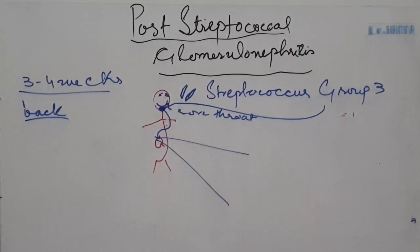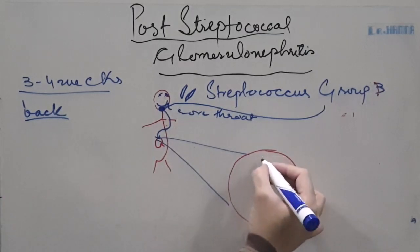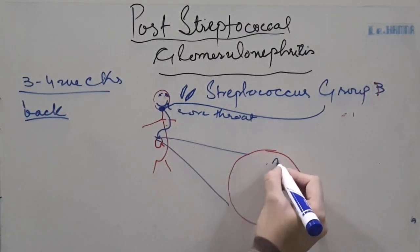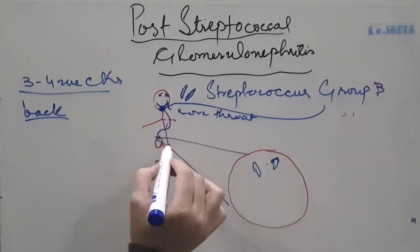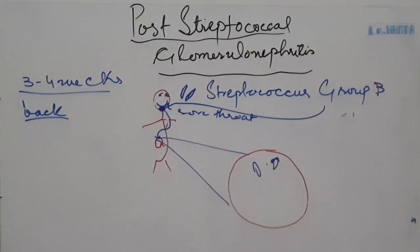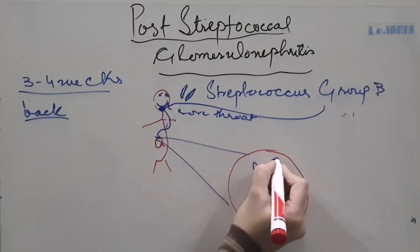So say for example if this is the glomerulus of the patient. What is happening in these three to four weeks? These are the capillary loops and this is the basement membrane. The circulating antigen will start depositing within the basement membrane in the sub-endothelial and sub-epithelial places.